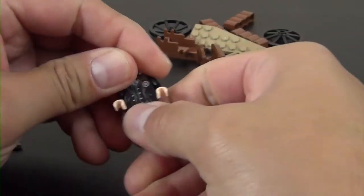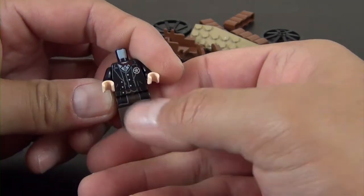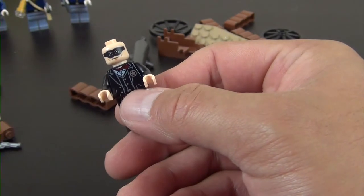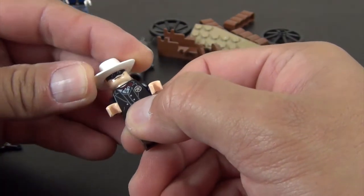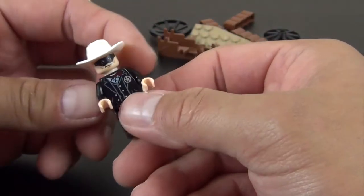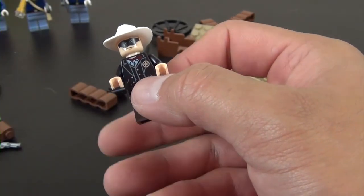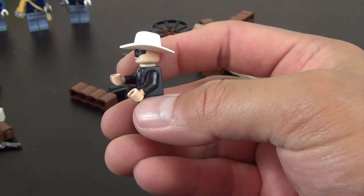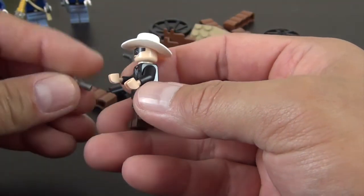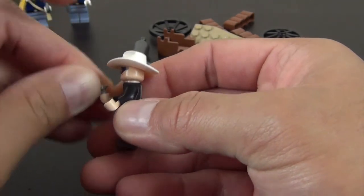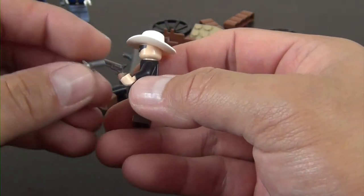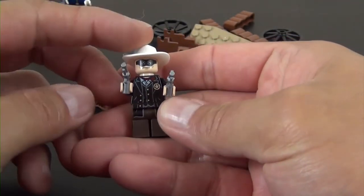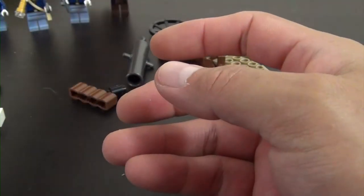So now we have Lone Ranger, and the Lone Ranger has obviously the Lone Ranger printed, I guess that's a little eye patch mask type thing, and he's going to be wielding two of the revolvers.